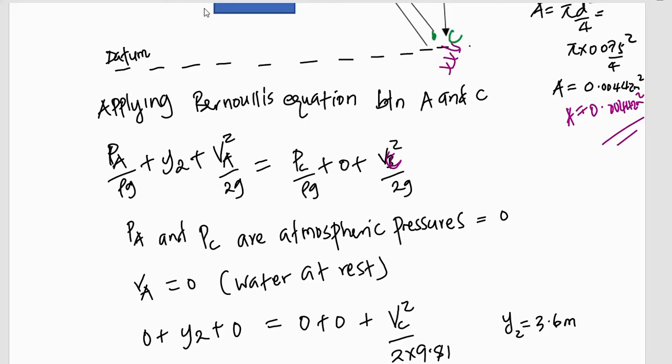Then, if V_A is equal to 0, remember, the water in the container here is at rest. So, V_A is equal to 0 meters per second. So, if we substitute those values in here, the given values, we shall have 0 plus y_2 plus 0 is equal to 0 plus 0 plus V_C squared out of 2G. G is 9.81, so it will be V_C squared out of 2 times 9.81. But remember, y_2, the height above C, point A, is 3.6 meters.